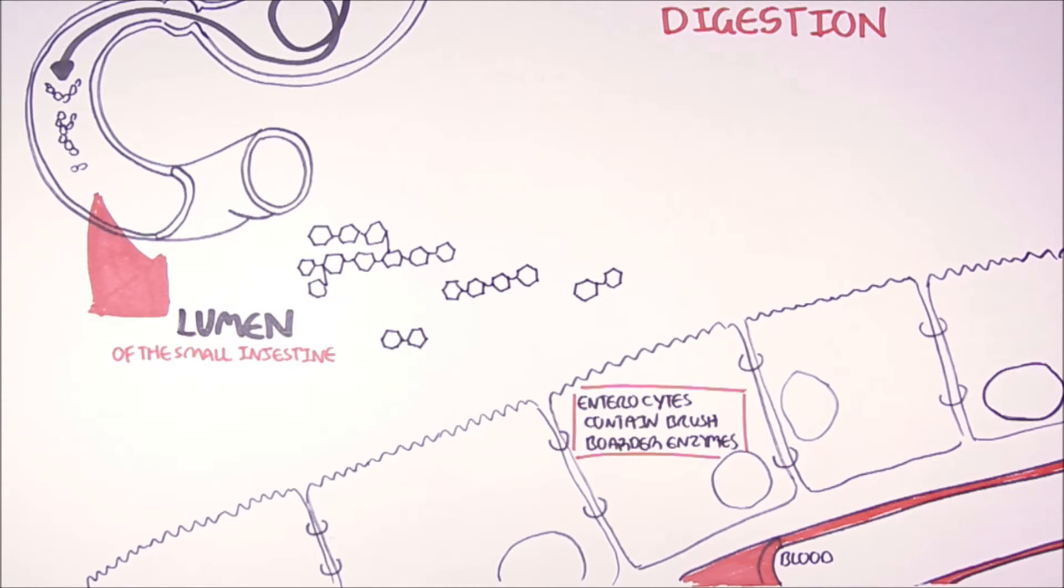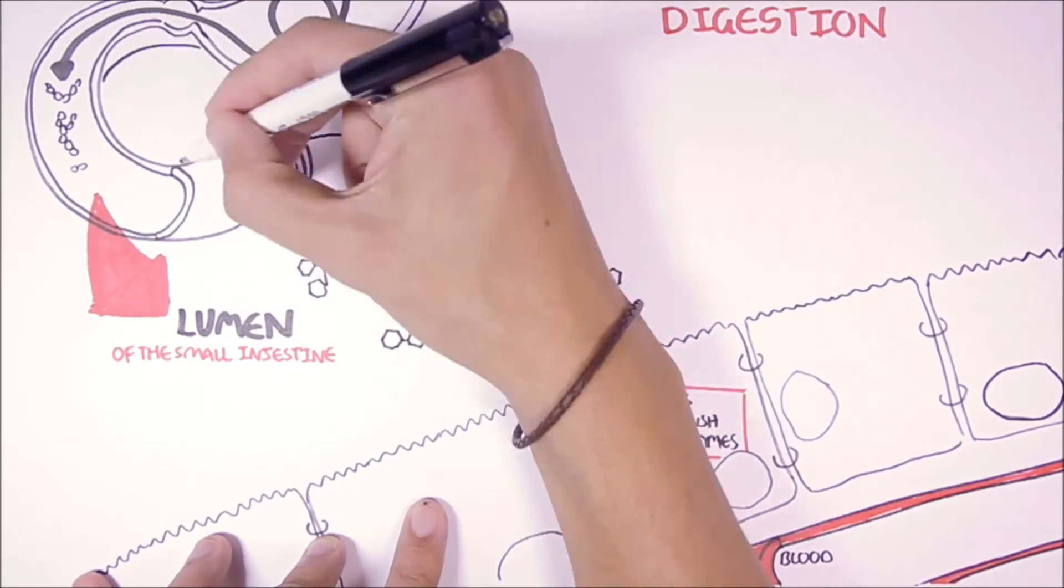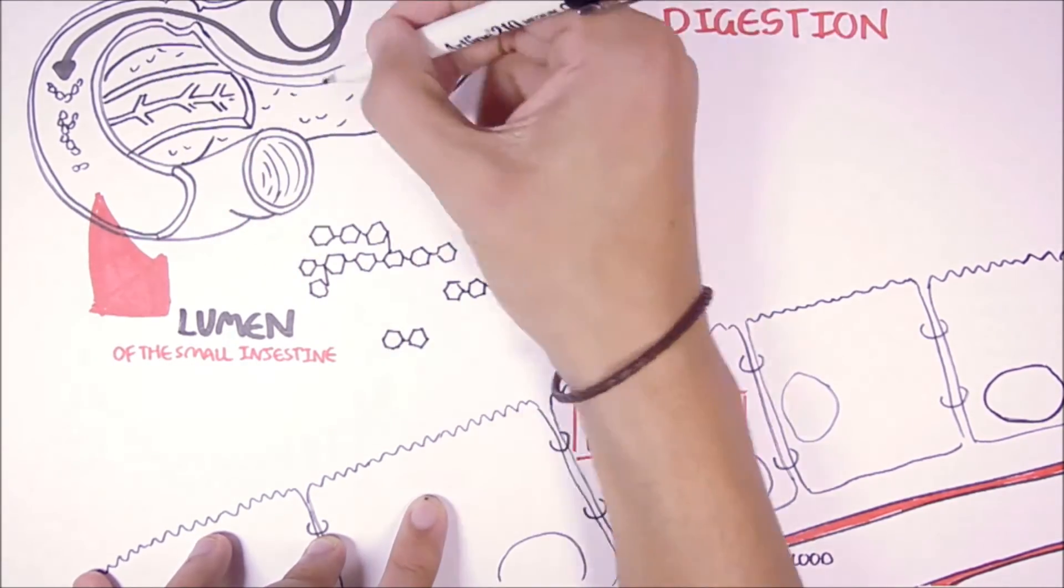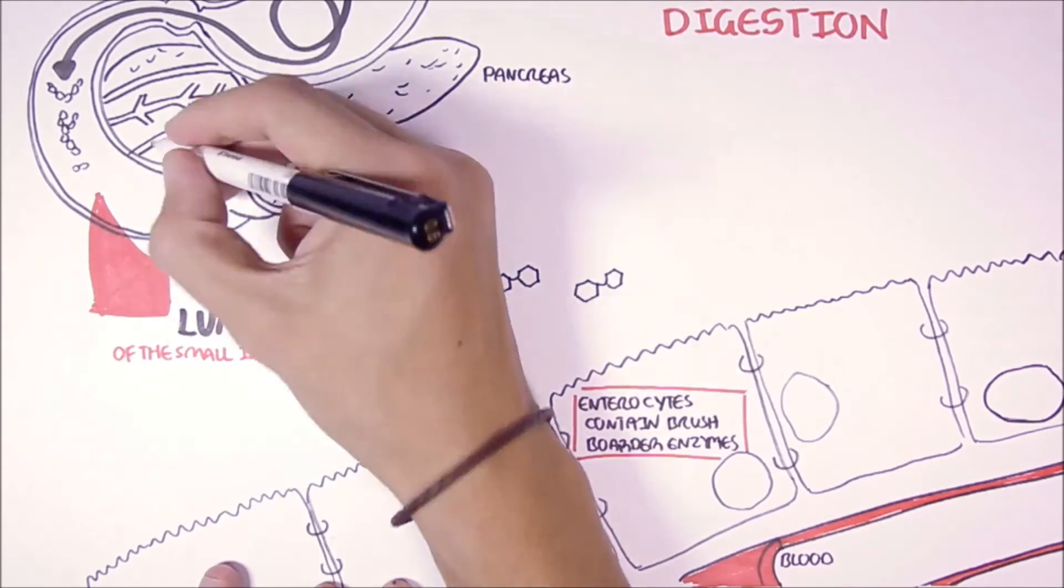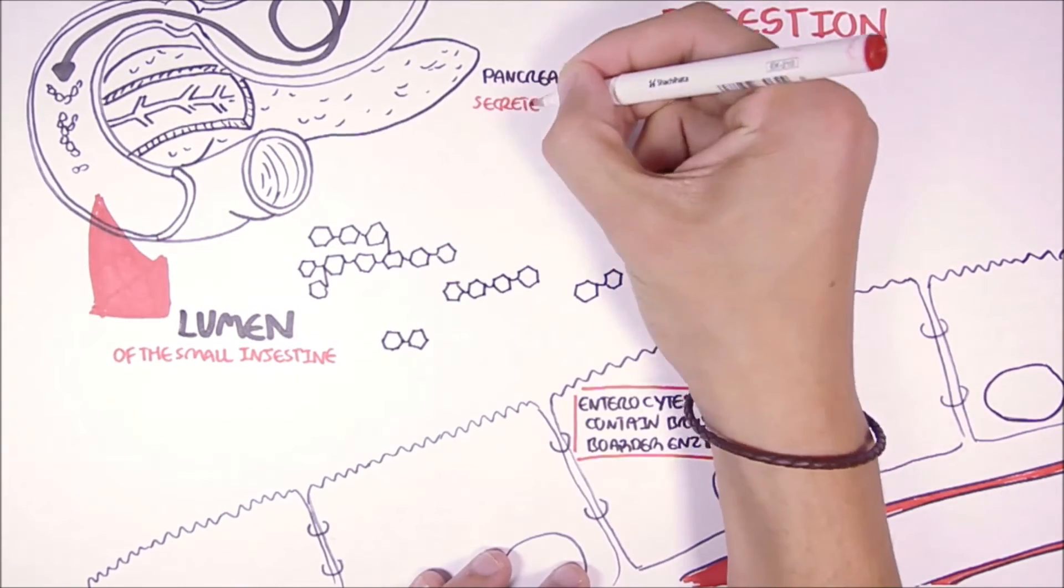Now when starch reaches the small intestine, another organ known as the pancreas, which is situated here, will begin to secrete alpha-amylase.